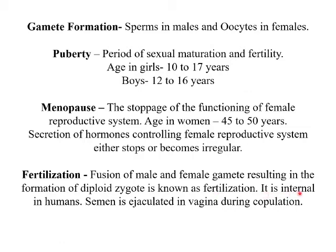Fertilization in human beings is internal. Semen is ejaculated into the vagina during copulation, and the sperm cells, due to their tail, can move up to the uterus. Out of millions of sperms, only one is capable of fusing with the egg cell to form a diploid zygote. These are the important terminologies with respect to the human reproductive system.